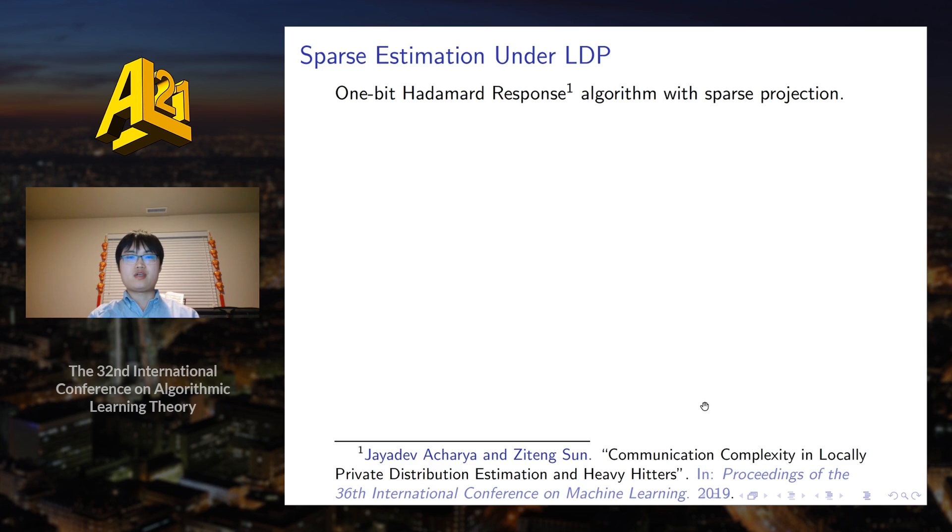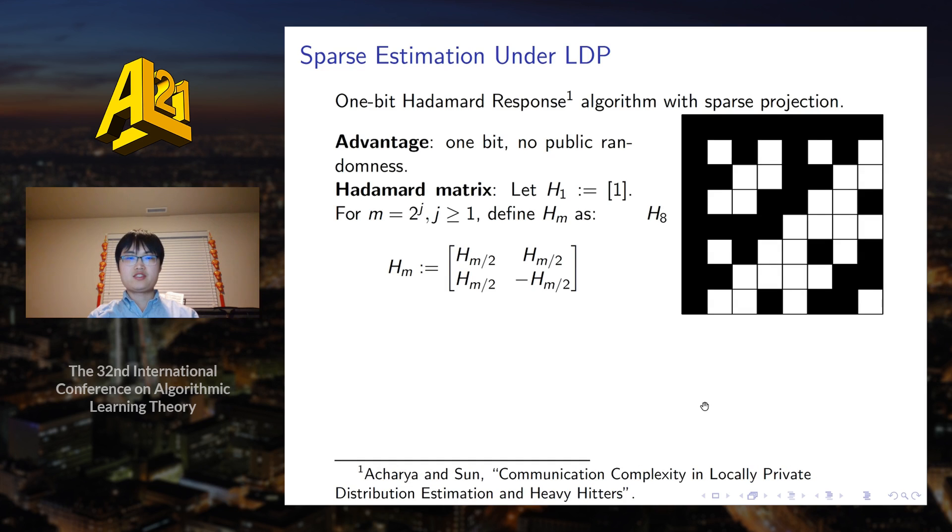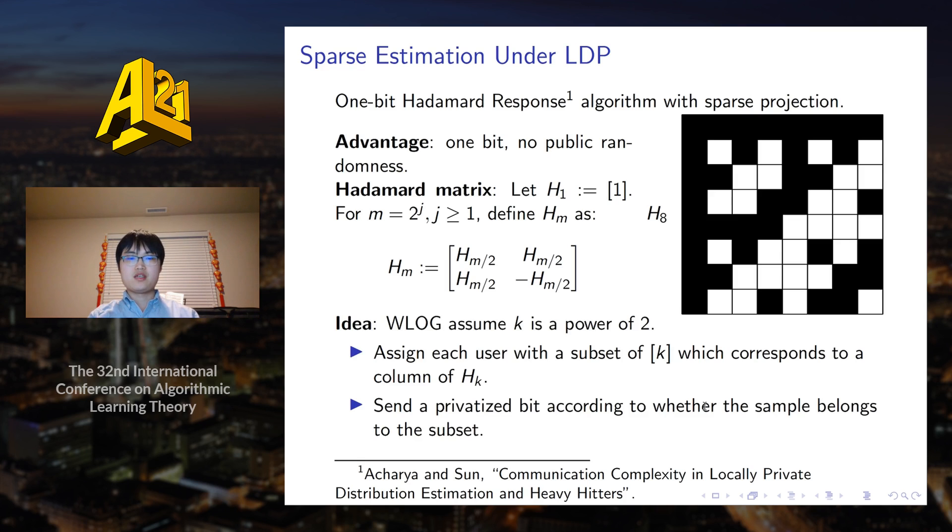Now I will introduce the algorithms. I will start with the LDP scenario. In this case, we use the one bit Hadamard response algorithm with an additional step of sparse projection. This is originally proposed by Acharya and Sun. The advantage is that it only uses one bit per user and requires no public randomness. It uses the Hadamard matrix, which is defined in the definition shown on the slide with an example on the right. The idea is that we assign each user with a subset of the domain, which basically corresponds to a column of the Hadamard matrix. Then the user would send a privatized bit according to whether the sample belongs to the subset.